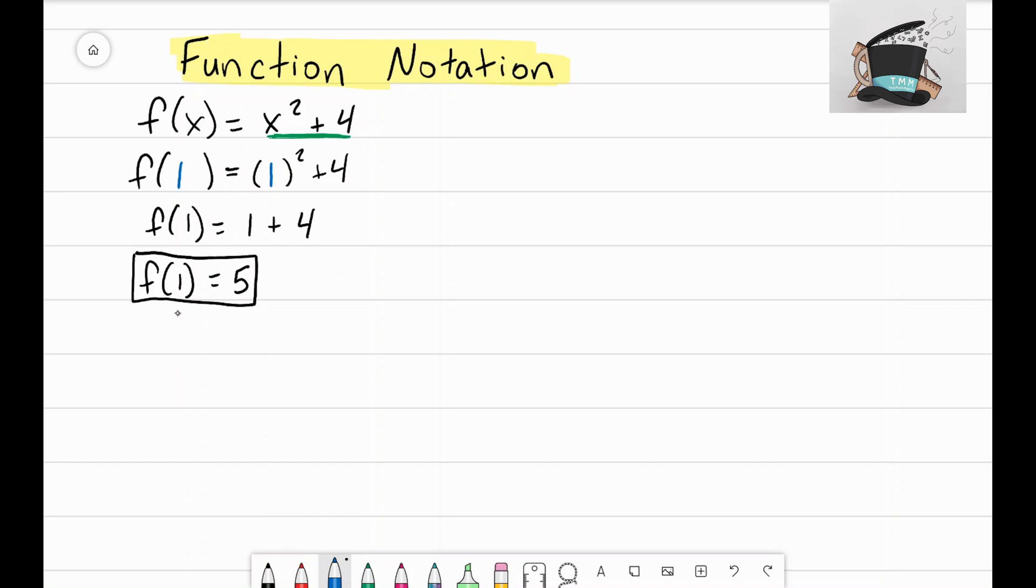Let's go ahead and label some of these things just so we can keep track. 1 is my input, f is my function or equation, and 5 is my output.